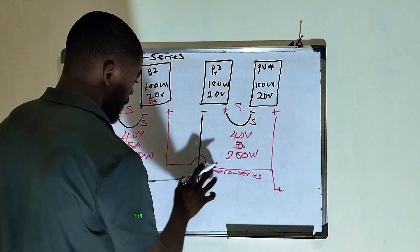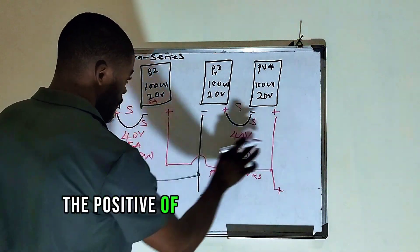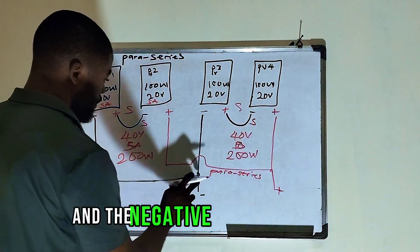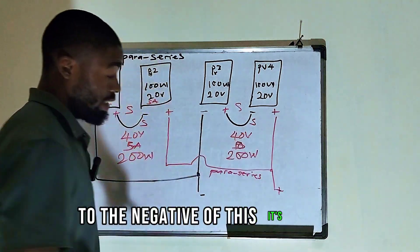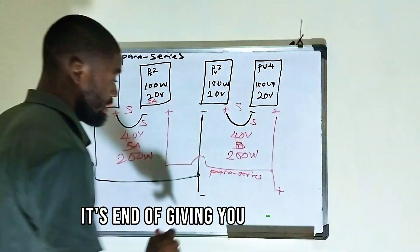Can say Series, Series. Then coming down here, the positive of this connected to the positive of this and the negative of this connected to the negative of this. It ends up giving you Paraseries.